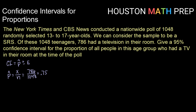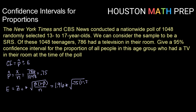For our margin of error, it will be our z critical value times the square root of p-hat times (1 minus p-hat) divided by n. Since we are using a 95% confidence level, our z critical value will be 1.96. We multiply that by the square root of 0.75 times (1 minus 0.75) all divided by n, the number in our sample. That gives us a margin of error of 0.026.